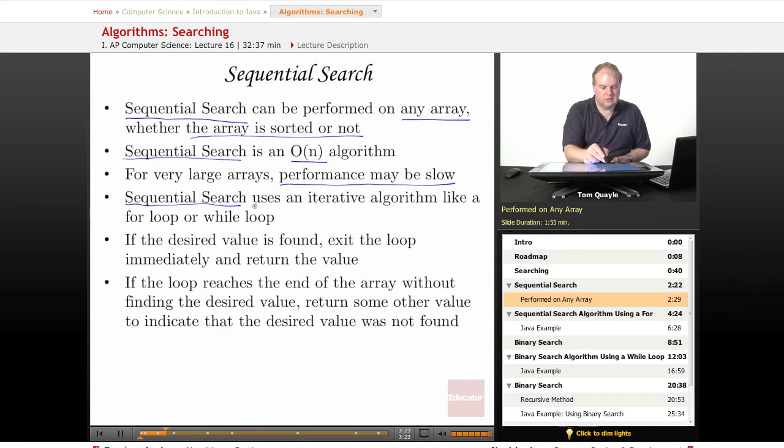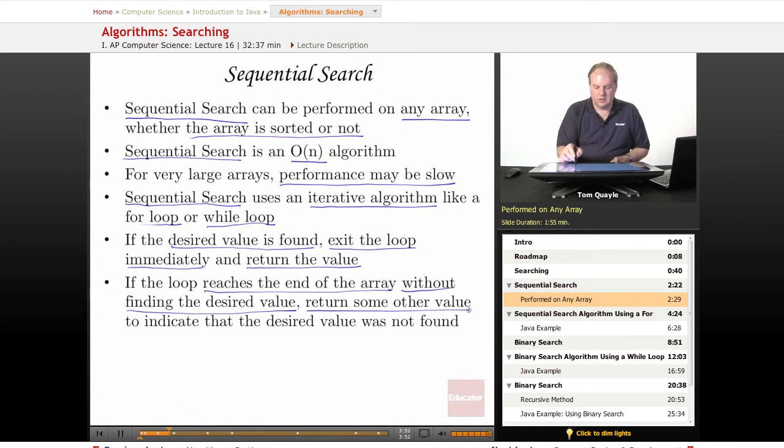Sequential search uses an iterative algorithm. Typically, you're going to use either a for loop or a while loop to implement sequential search. If the desired value is found, you can exit the loop immediately and return the value. If the loop reaches the end of the array without finding the desired value, then you're going to return some other value that is not a value that may be in the array to indicate that the desired value was not found.